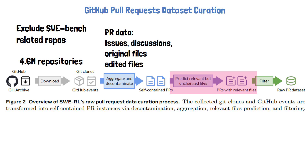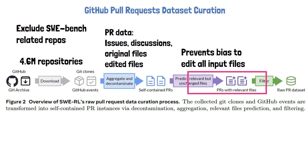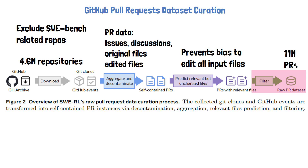The researchers discovered that just feeding the model only with the files that are edited causes the model to develop a bias where it will generate edits to all of its input files. This is undesirable, since in practice some files are relevant to the code change but do not require a change themselves. The researchers use Llama 3.1 70B Instruct to predict which files are related given the pull request description and the parts of the edited files. Finally, not all GitHub pull requests are of high quality — some are generated by bots and others include just a version bump. Therefore, the researchers employed various filtering rules to remain with a dataset of approximately 11 million high-quality pull requests.